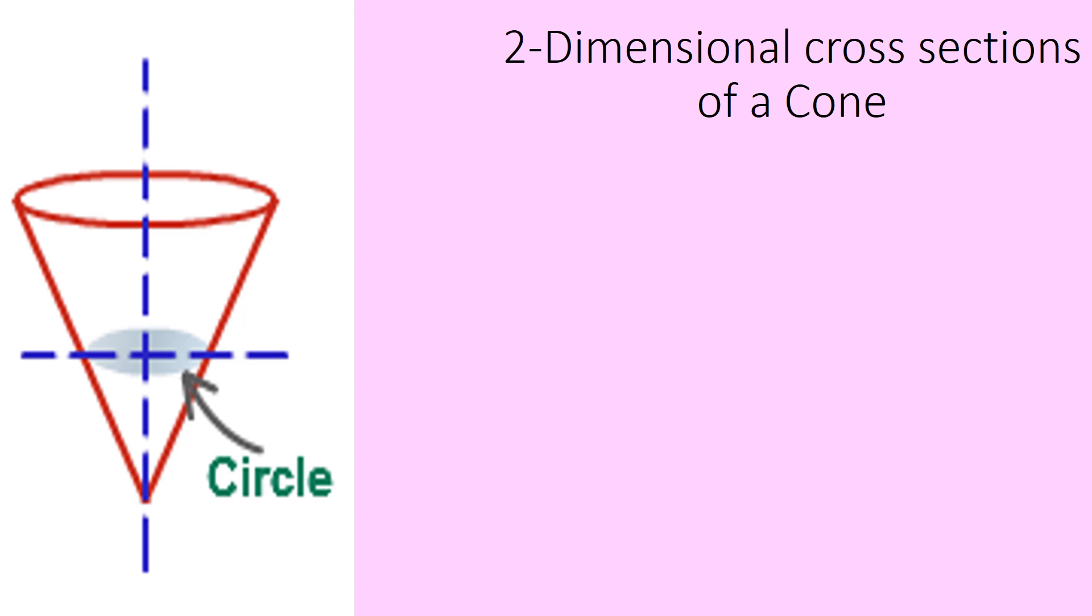Let's do the cone. What's the base of a cone? A circle. And you can see that in the drawing. But what happens when you do a vertical? When you do a vertical, you're going to get a triangle.